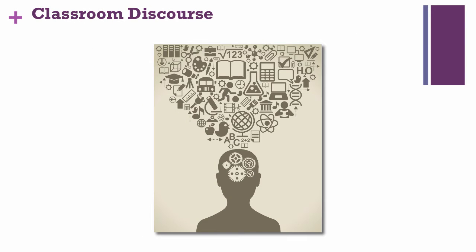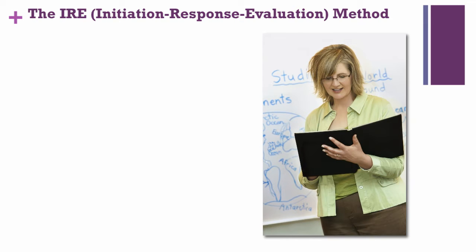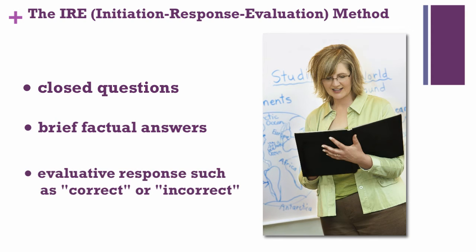In your classroom discourse, what types of thinking and comprehension do your questions require of your students? The IRE and IC methods require different levels of student thinking. If you use the IRE method, here is what your classroom conversation might look like. Number one, you ask a closed question to which you already know the answer. Number two, your students must respond with a brief but correct response, proving that they know certain facts. And three, you respond with an evaluation such as 'good,' 'that's right,' or 'that's incorrect.'